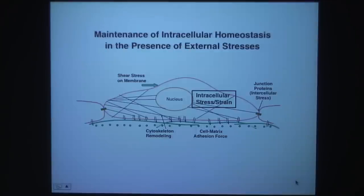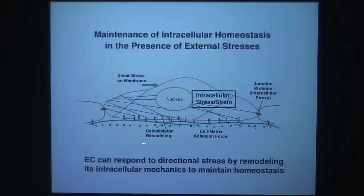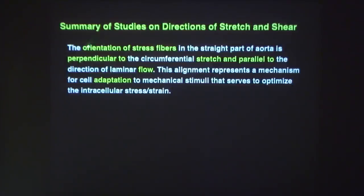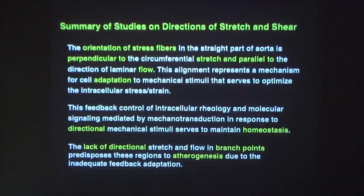The endothelial cell can respond to directional stress by remodeling its intracellular mechanics to maintain homeostasis. The summary on directionality of stress and shear: in the straight aorta, stress fibers are oriented perpendicular to the circumferential stretch and parallel to the direction of flow — these two are synergistic and represent the cell's adaptation to mechanical stimuli. This feedback control is very important for maintaining homeostasis. Without such directional stretch, as at branch points, you are prone to atherogenesis.